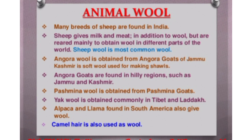There are many breeds of animals from which we get wool. Many breeds of sheep are found in India. Sheep give us milk and meat also, in addition to wool, but are reared mainly to obtain wool in different parts of the world. Sheep wool is the most common wool. Angora wool is obtained from Angora goats of Jammu and Kashmir - it is a soft wool used for making shawls. Yak wool is obtained commonly in Tibet and Ladakh, and camel hair is also used as wool.